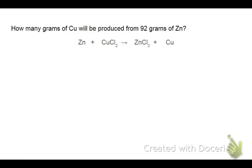So in this one, it says, how many grams of copper will be produced from 92 grams of zinc? Again, we're given an equation. And in this case, it actually looks like our equation is balanced.